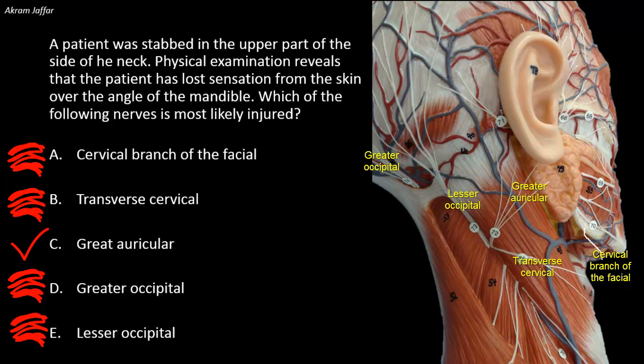Although not mentioned as a choice, to complete the topic on the cutaneous innervation of the neck, the fourth cutaneous branches from the cervical plexus are the supraclavicular nerves, derived from C3 and C4. They arise as a single trunk which divides into medial, intermediate, and lateral cutaneous branches. They supply the skin of the neck and the anterior chest as far down as the sternal angle, because below that level the dermatome is T2. On the lateral side, they supply the skin over the shoulder and the upper part of the deltoid muscle, and backwards, down to the level of the spine of the scapula.